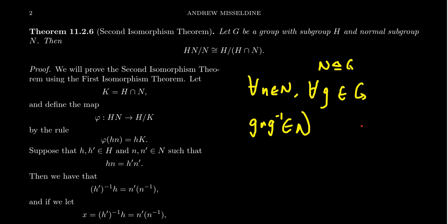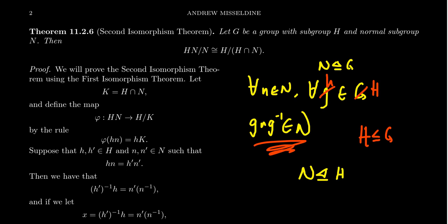Since H is a subset of G, if we restrict the set we conjugate by to H — which contains fewer elements than G — N will still be closed under conjugation. So if N is closed under G-conjugates, then N will also be closed under H-conjugates. The conclusion we make from that is that N will be a normal subgroup of HN.